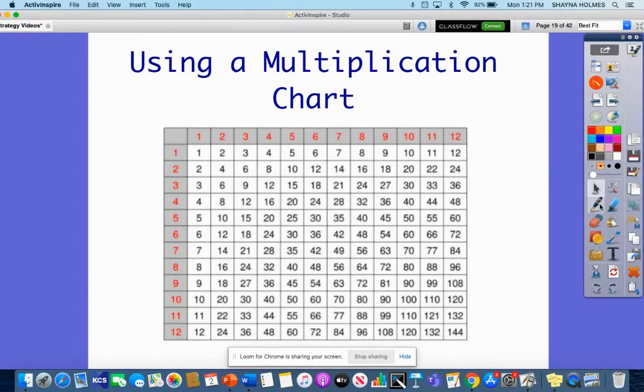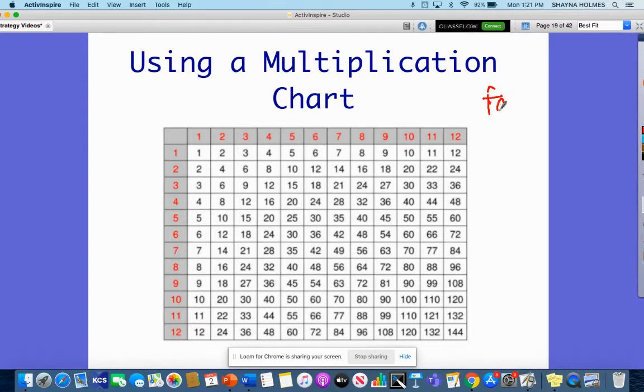We have a lot of vocabulary here. The first one is a factor. A factor is just two numbers that are multiplied together. When you look at a multiplication chart, all these numbers here in red, those are our factors. For example, two times three.